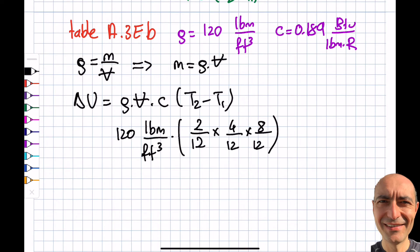The multiplication of these three will be feet cube. So you can see I get myself pound mass, which makes a lot of sense because this is mass. And then I multiply this by 0.189 BTU per pound mass times Rankine. So you can see now, pound masses cancel. So I get myself BTU per Rankine.